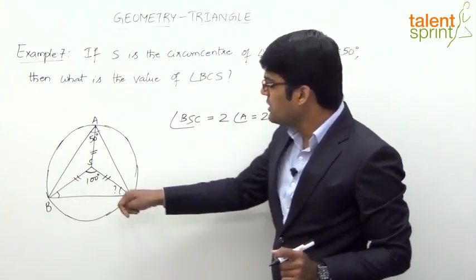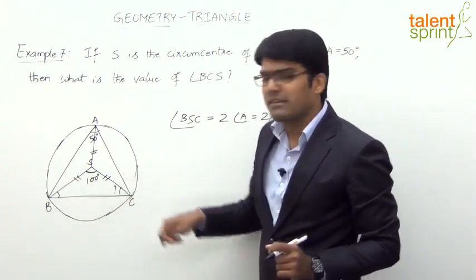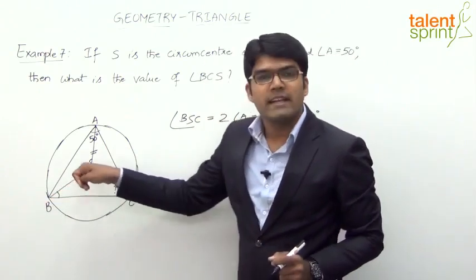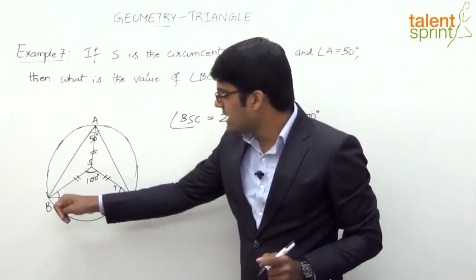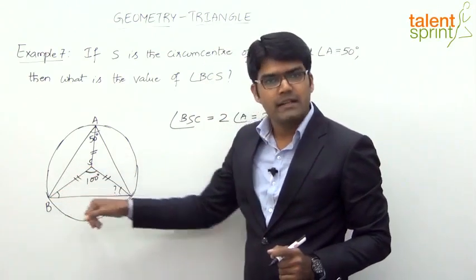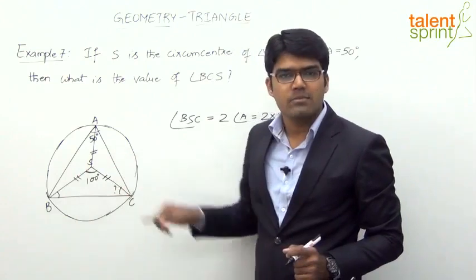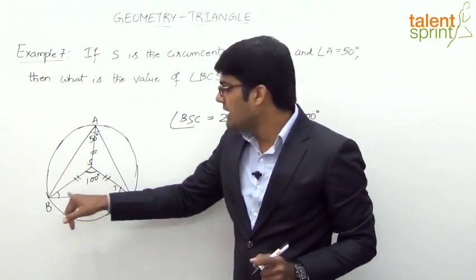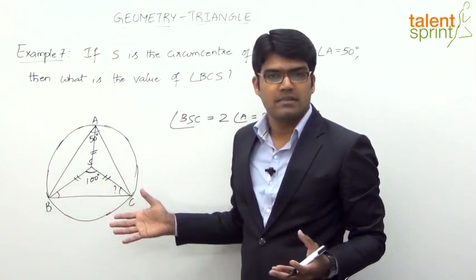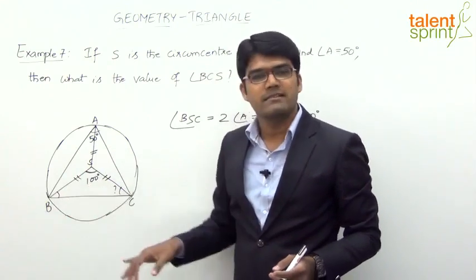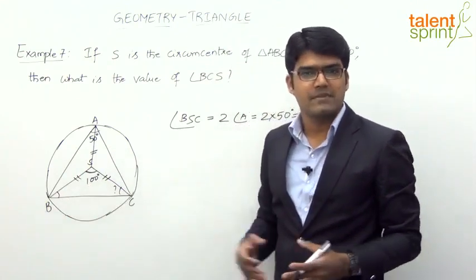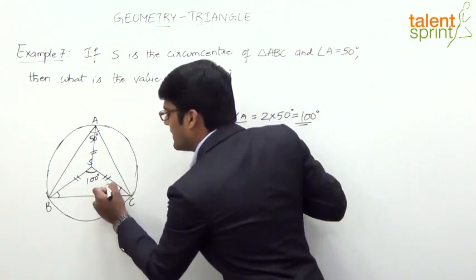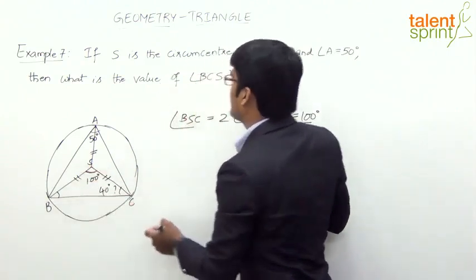Now we need to find angle BCS. We know that the sum of all three angles in triangle BCS must be 180 degrees. Angle BSC is already 100 degrees, and the other two angles — angle CBS and angle BCS — are equal. So the two remaining angles together make 80 degrees, meaning each is 40 degrees. So angle BCS equals 40 degrees.